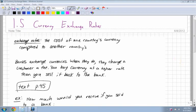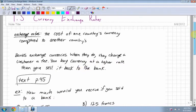All right, section 1.5 is currency exchange rates. So the exchange rate is the cost of one country's currency compared to another country's currency. Banks exchange currencies when they do, they charge a customer fee. You buy currency at a higher rate than you sell it back to the bank. They want to make a bit of money.